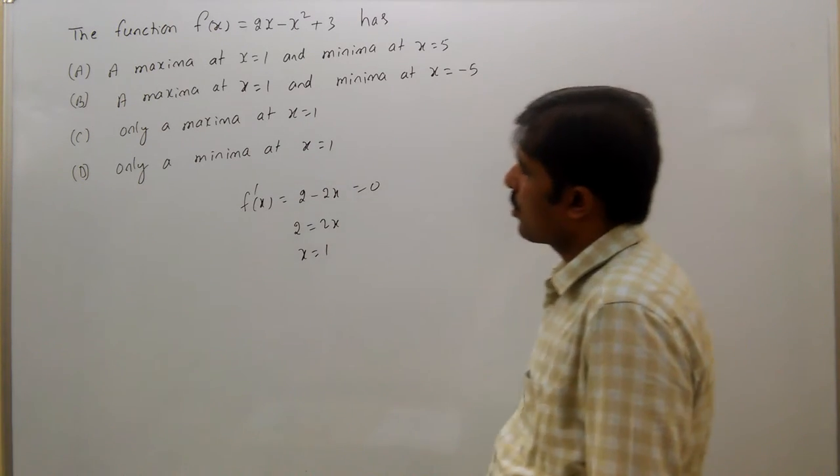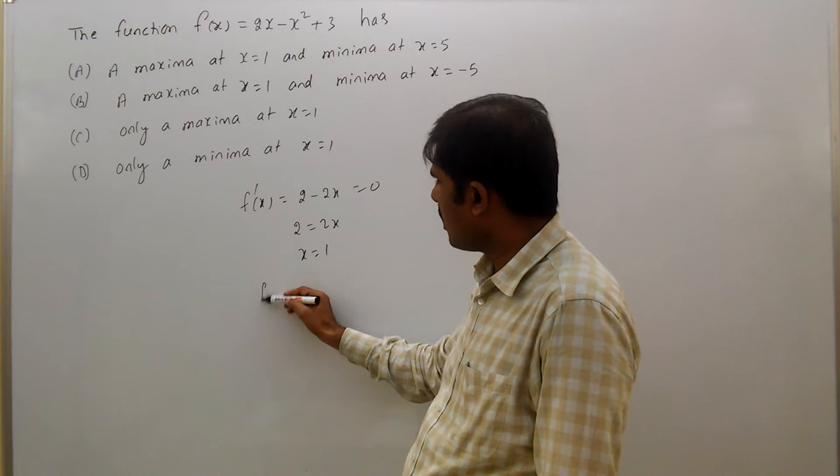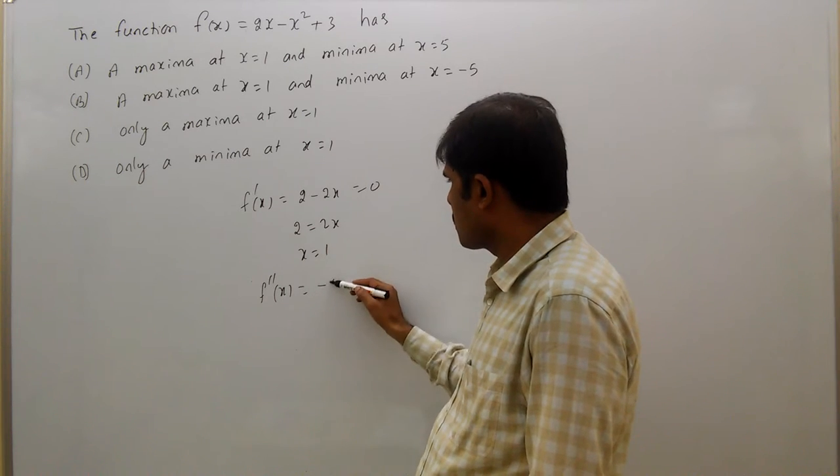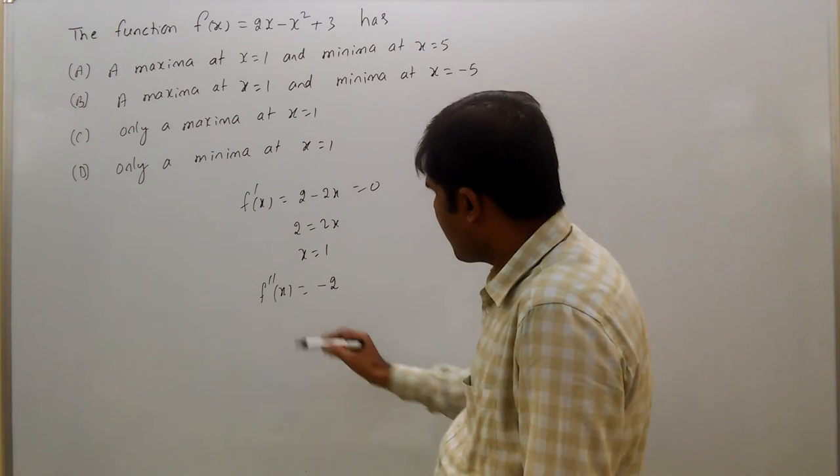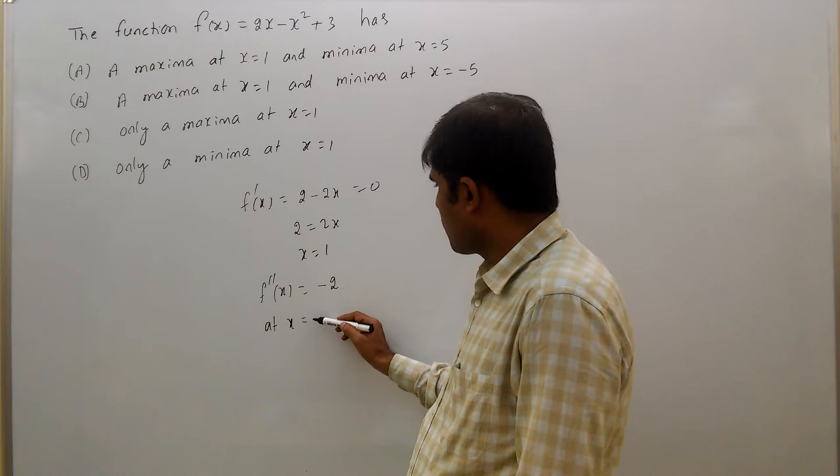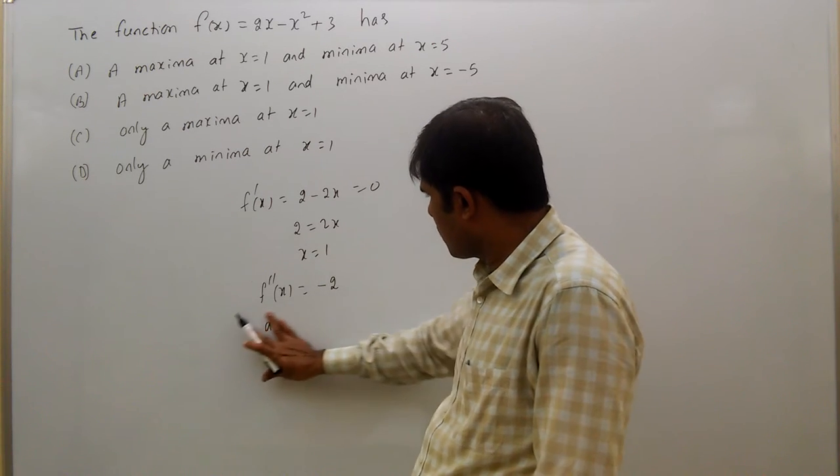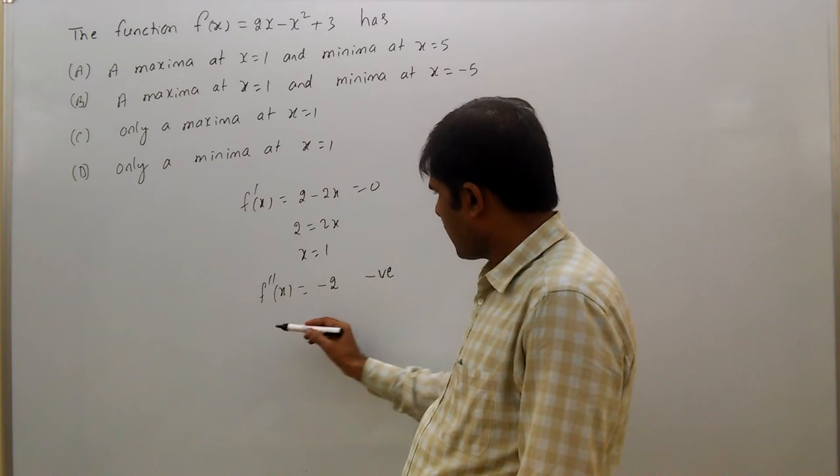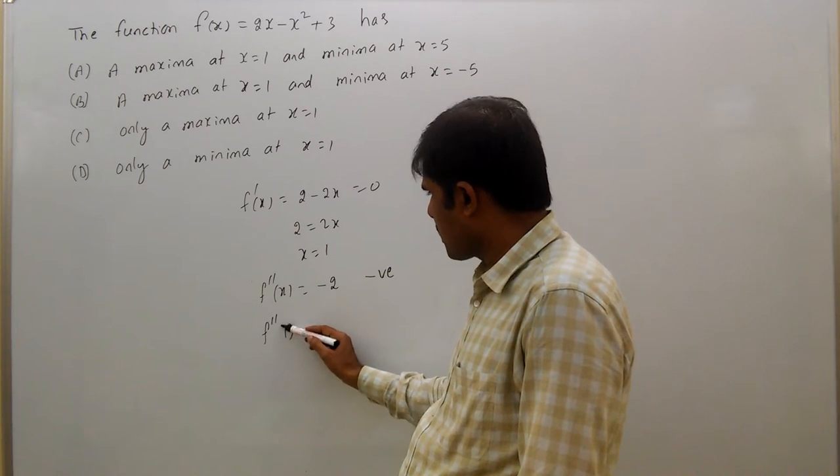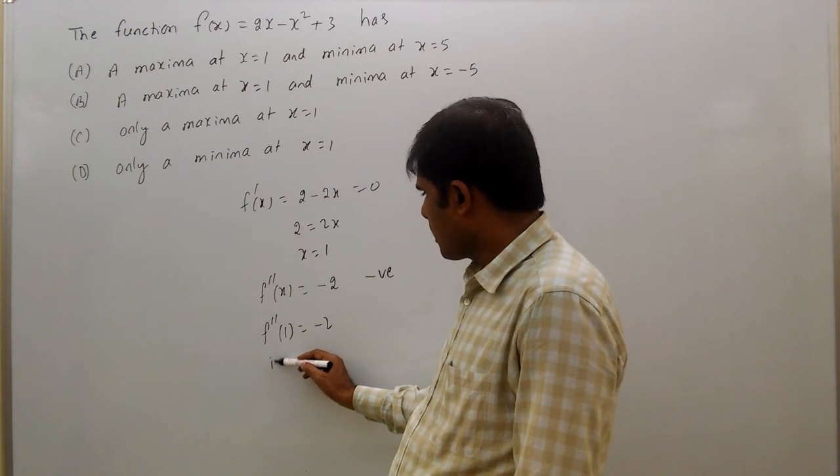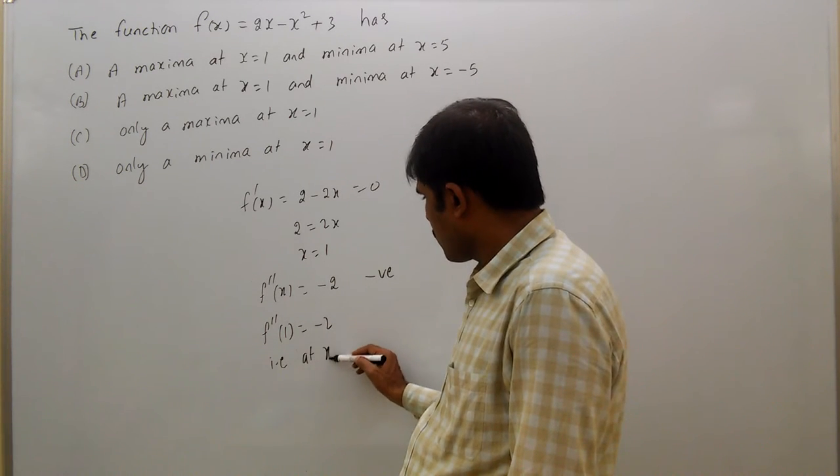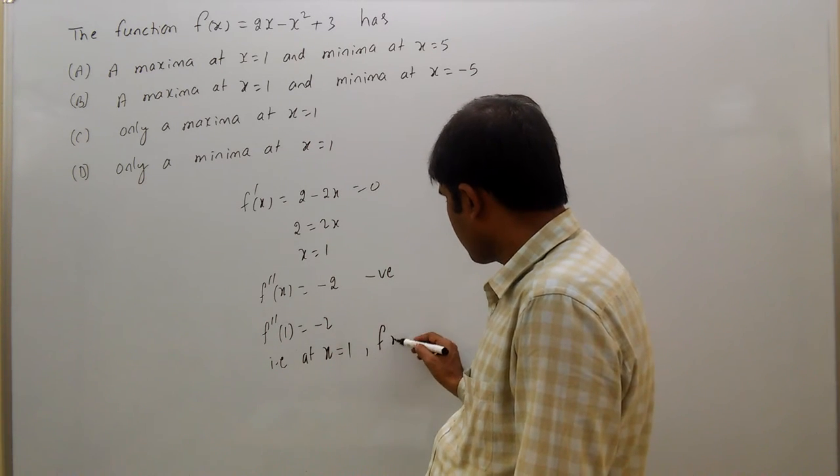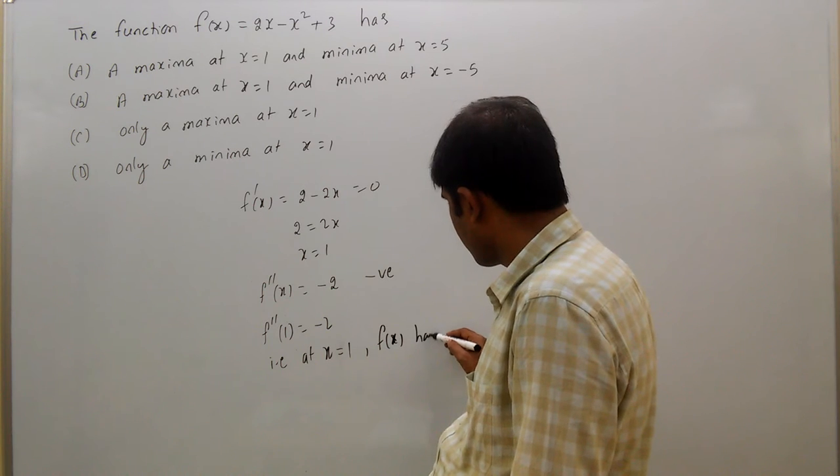That means f''(x) = -2. At x = 1, f''(1) = -2, which is negative. Therefore, at x = 1, f(x) has a maxima.